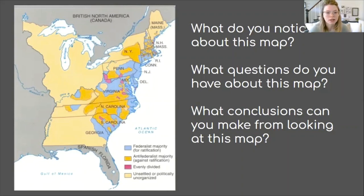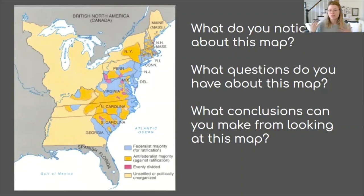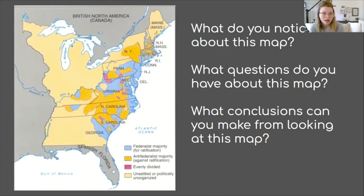Something I notice when I look at this map is the different colors. Looking at my key, blue represents federalist majorities — meaning most of those people wanted to ratify the constitution, which basically means to pass it. The orangey-yellow color represents anti-federalist majorities, meaning the majority of people in that area were against passing the constitution — they were probably on George Mason, Patrick Henry, and Samuel Adams' team.